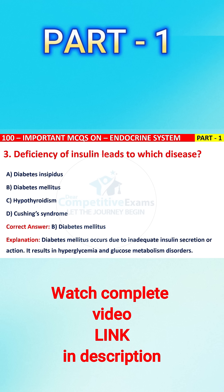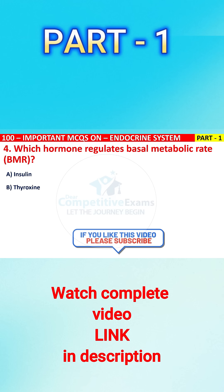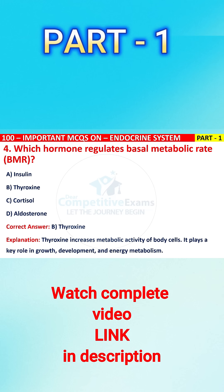Question 4. Which hormone regulates basal metabolic rate (BMR)? Your options are: insulin, thyroxin, cortisol, or aldosterone. The correct answer is B, i.e., thyroxin. Thyroxin increases metabolic activity of body cells. It plays a key role in growth, development, and energy metabolism.